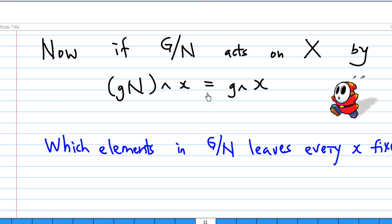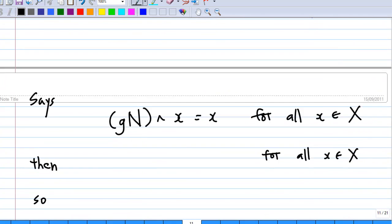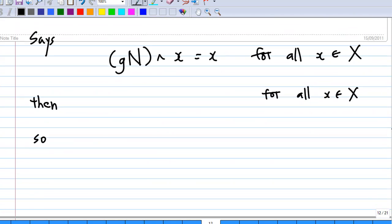The next question we want to ask is, which element in G by N leaves every x fixed? Let's investigate. Suppose element of G by N, let's say g times N, leaves element x fixed for all x here.